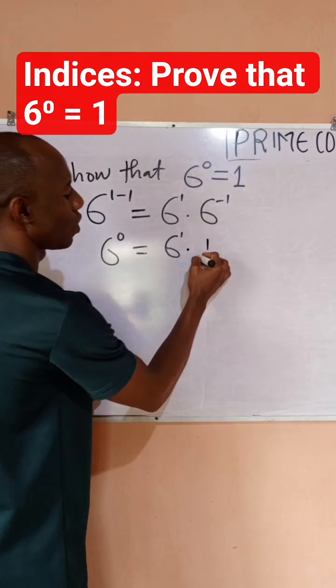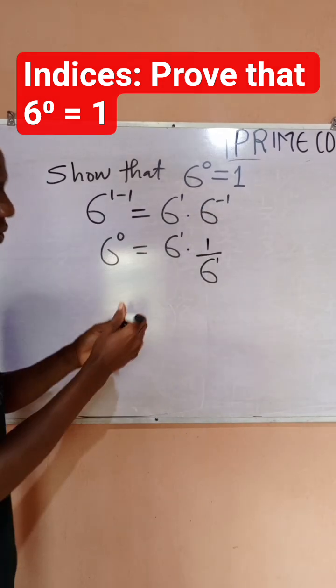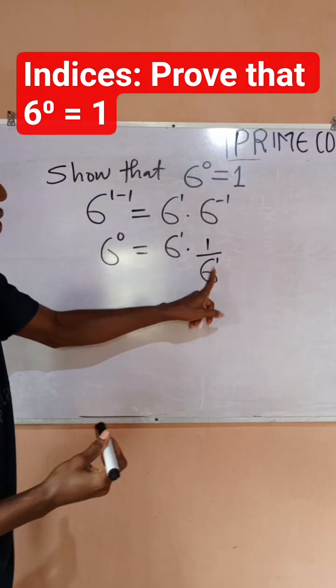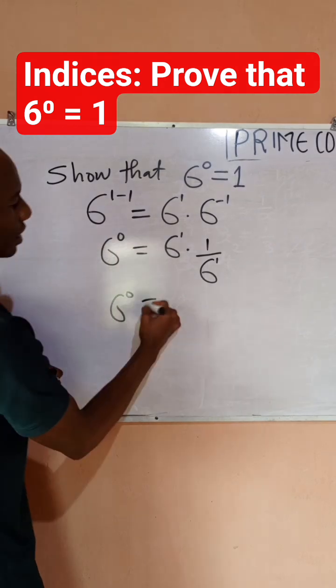So I can say times 1 divided by 6 raised to power 1, right? Because I've brought this down. When you take a negative index down, it comes down and becomes positive. So 6 raised to power 0, which is still this, is equal to 6 raised to power 1 times 1, which is 6.